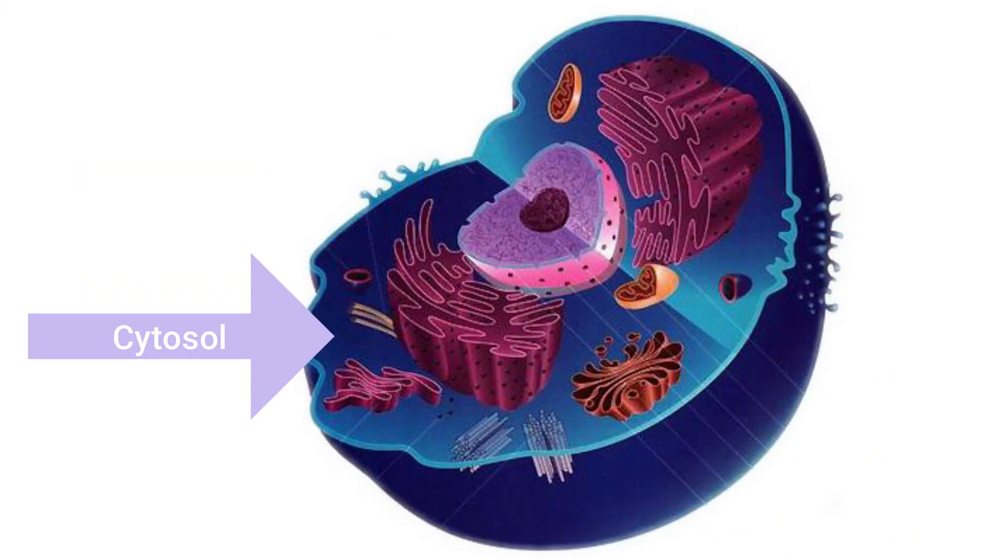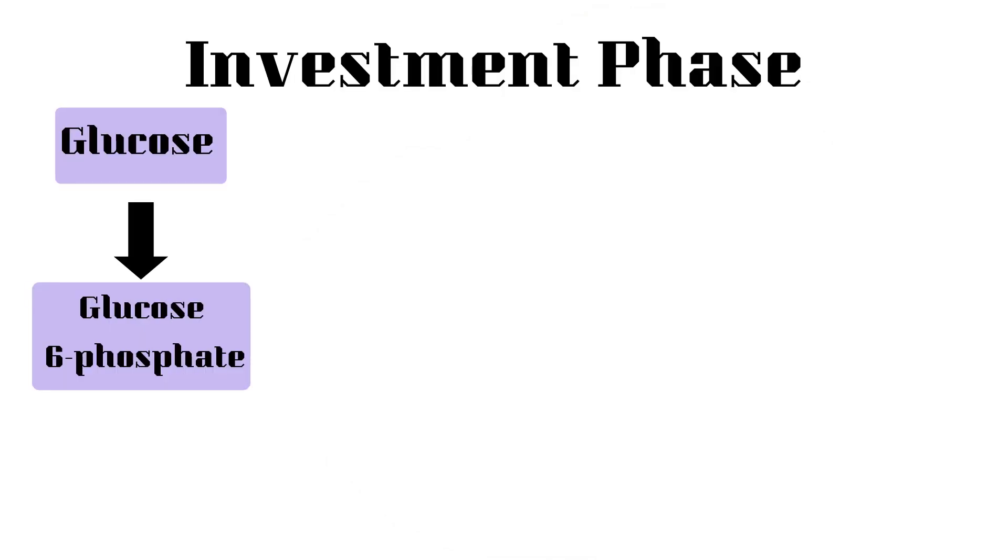Glycolysis occurs in the cytosol. The glucose molecule is transformed into glucose 6-phosphate through the addition of a phosphate group to the glucose molecule. This process of adding a phosphate group is called phosphorylation. This reaction occurs with the help of the enzyme hexokinase. Because this reaction is adding a phosphate group, it uses energy, resulting in the loss of one ATP molecule.